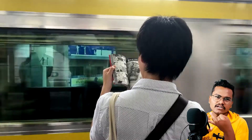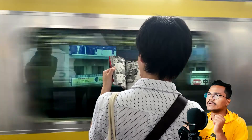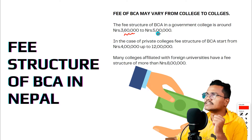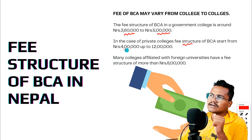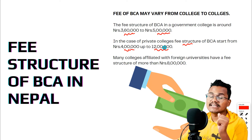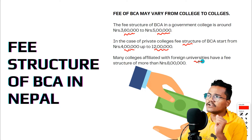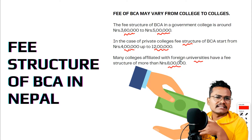Regarding fee structure: private colleges have different fee ranges. Some colleges affiliated with foreign or international universities may charge higher fees. Government colleges are comparatively cheaper. Fees change every year — roughly a 10-20% increase — and also depend on the facilities provided by the college, faculty, extra-curricular activities, seminars, and programs.